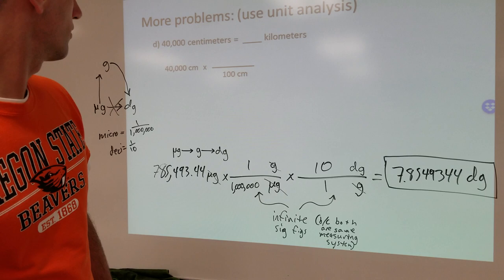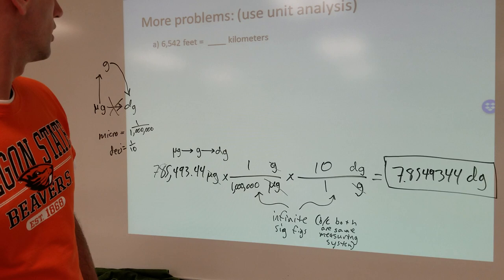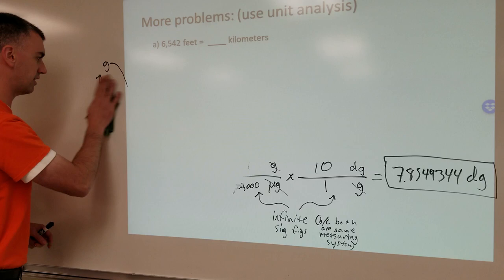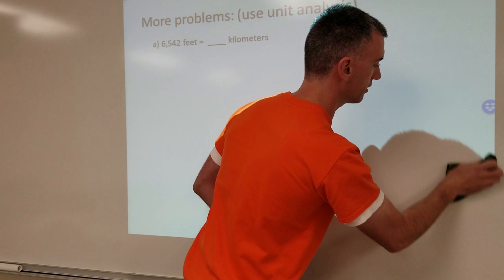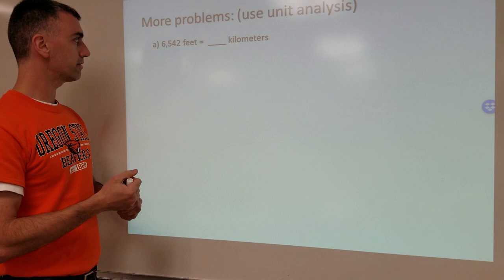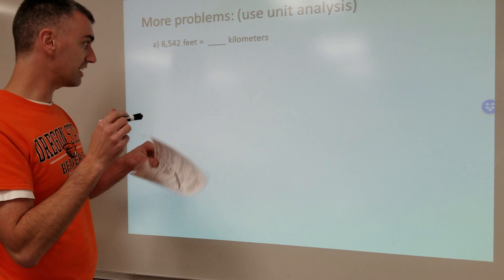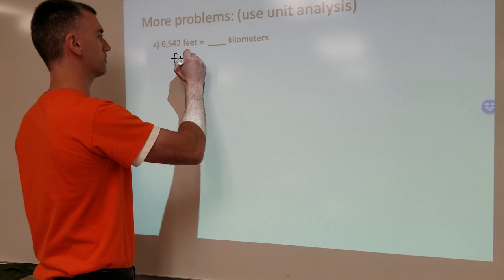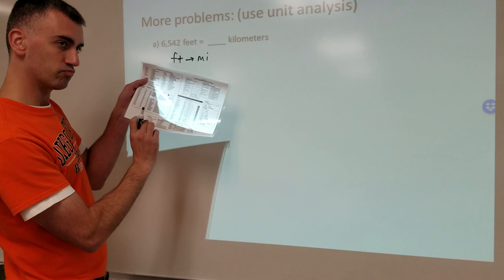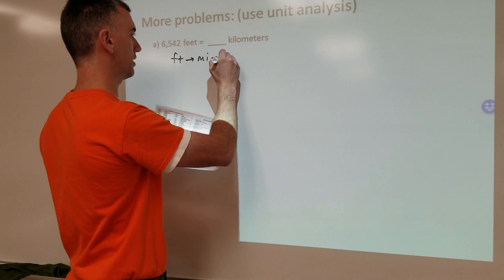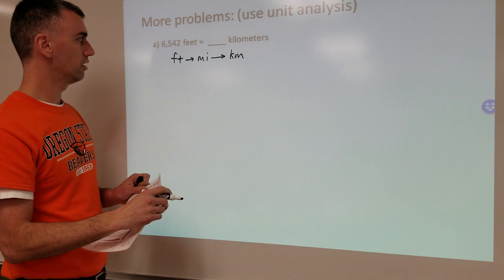We can look at an example where the conversion is not a definition — where your conversion factor does not have infinite significant figures. For example: 6,542 feet equals blank kilometers. We've got to look and see what we can find to get from feet to kilometers. There's nothing on the chart saying how many feet are in a kilometer, but it does tell you how many feet are in a mile. And another portion of the reference sheet tells you how many miles are in a kilometer. So we can take two steps: feet to miles, then miles to kilometers.